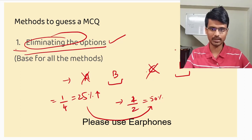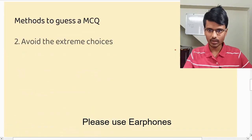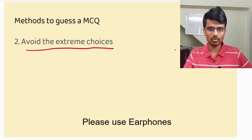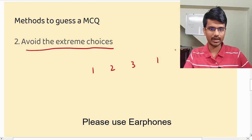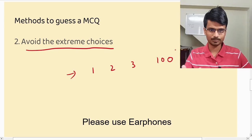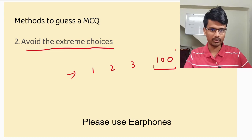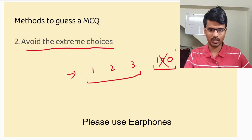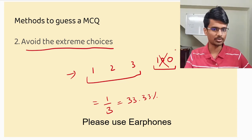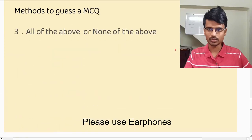The second method is to avoid the extreme choices. Say we have 1, 2, 3, and 100 as the options. Reading the question, you can make a guess that it is not going to be 100 — it is a very extreme value. So it is either one of the three remaining options. Again you have increased your probability to one by three, which is 33.33%. This is a very useful method that you can use in combination with elimination of options.